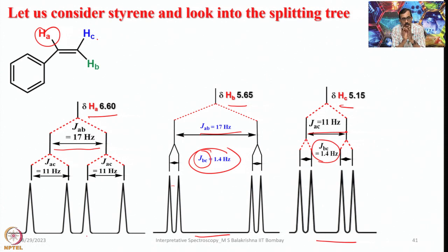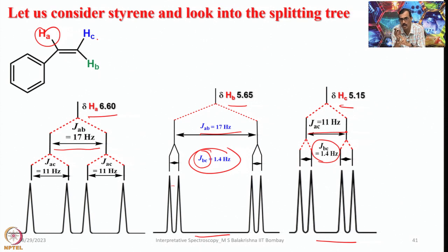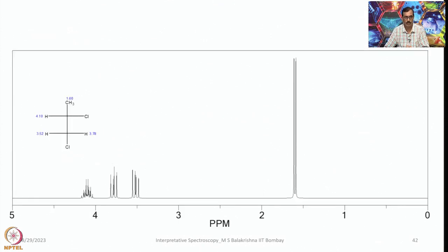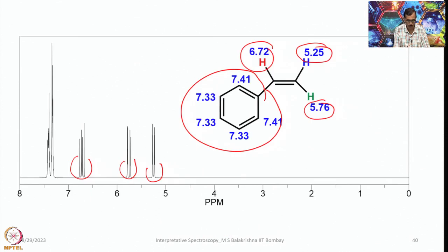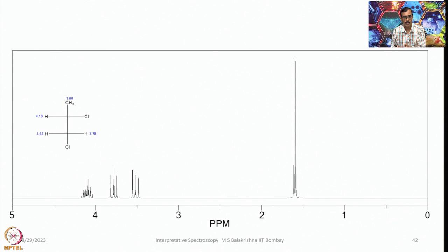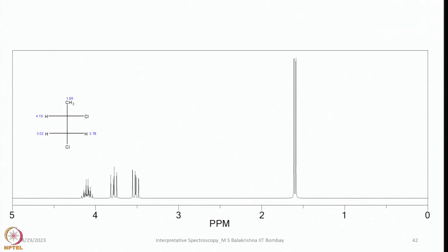In the styrene olefinic region, we see four signals, each having four lines — all three vinyl protons show doublet of doublets patterns. This is clearly visible in the spectrum where all signals in that region are doublets of doublets.